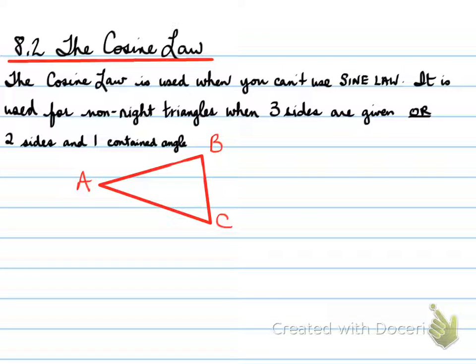All right. Next. The formula for cosine law looks very similar to the Pythagorean theorem. It's A squared equals B squared plus C squared minus 2BC. So the sides that you're given 2BC cosine A.